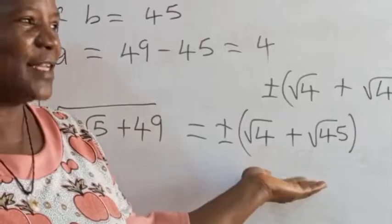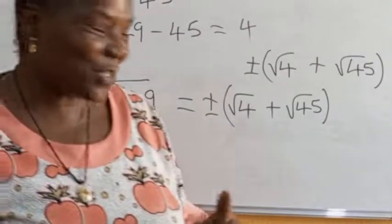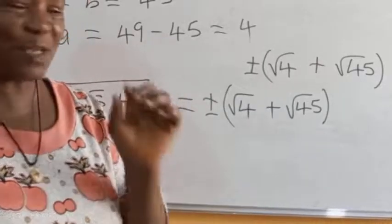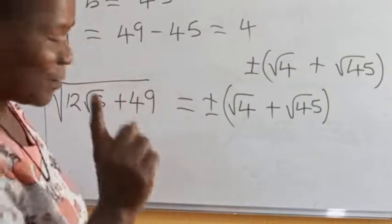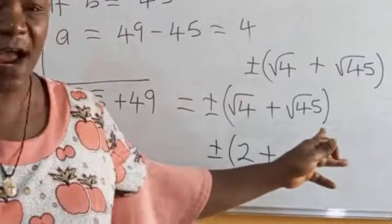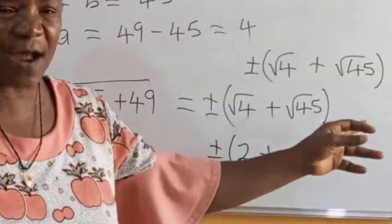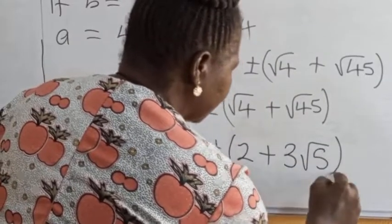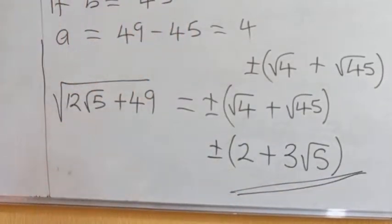You can square this to convince yourself it is indeed the square root. Note that √4 and √45 are not simplified, so you should simplify. √4 = 2. For √45: 45 = 9 × 5, so √45 = √9 × √5 = 3√5. So the final simplified answer is ±(2 + 3√5).